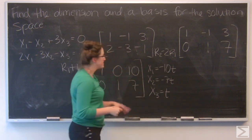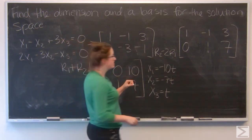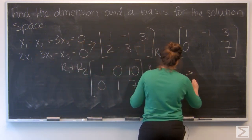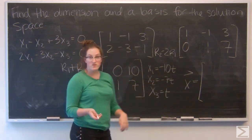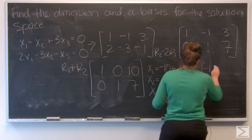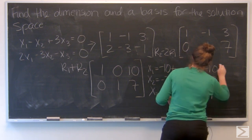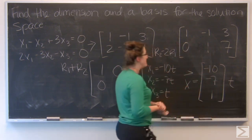I'm going to rewrite this by pulling a t out of each component. So I have the vector x equals negative 10, negative 7, 1, all times t.